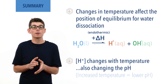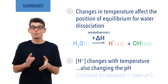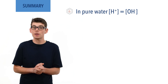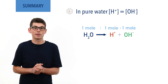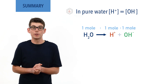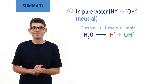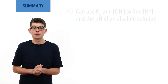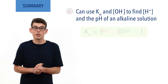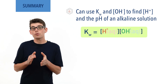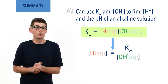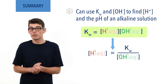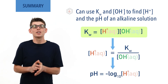Higher temperatures decrease the pH as H plus ion concentration increases. In pure water, the concentrations of H plus and OH minus ions are always the same, as each dissociating molecule releases one of each — meaning the water is always neutral, even if it doesn't have a pH of 7. The value of Kw and OH minus concentration can be used to find the pH of alkaline solutions: concentration of H plus equals Kw divided by concentration of OH minus, which can then be substituted into pH equals minus log of concentration of H plus to find the pH.